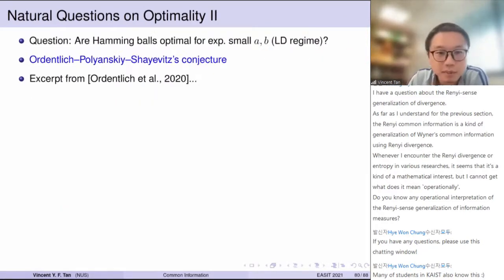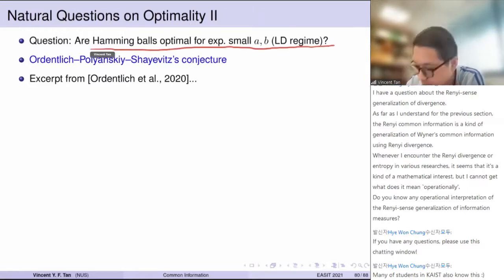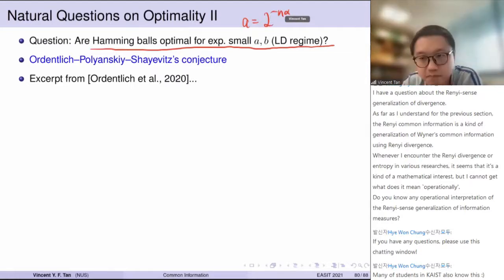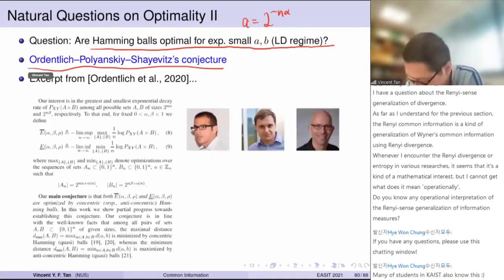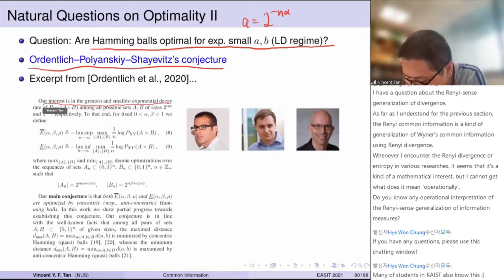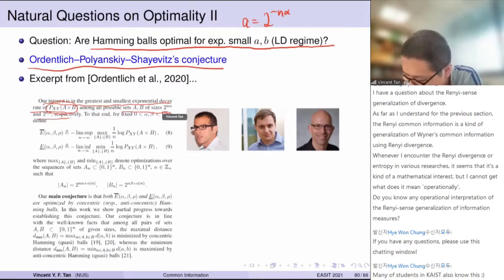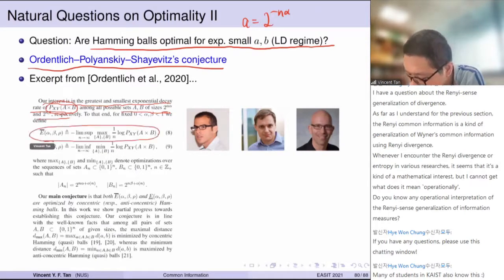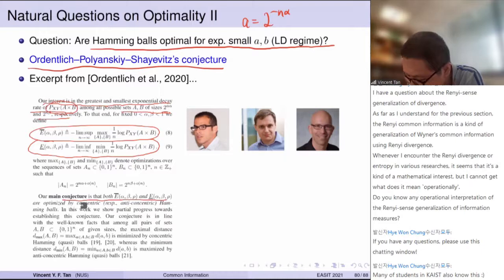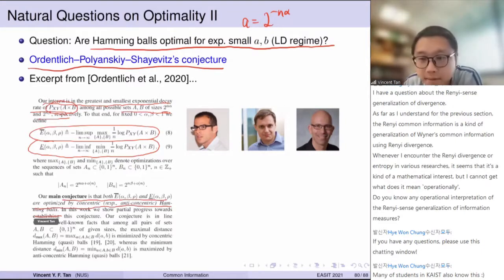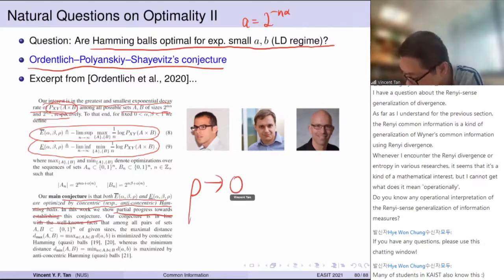The OPS problem asks: are Hamming balls optimal for exponentially small a and b, where a = 2^{-n*alpha} and b = 2^{-n*beta}? This is the Ordentlich-Polyansky-Shamai conjecture. Their interest is in the greatest and smallest exponential decay of the joint probability for all sets of a certain size — sets of size roughly 2^{n*alpha} — and the exponent of the joint probability. The main conjecture is that these exponents are attained by concentric or anti-concentric Hamming balls.